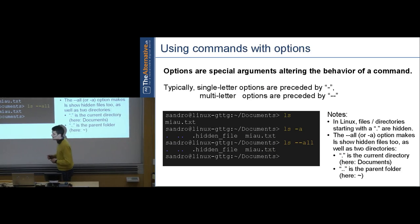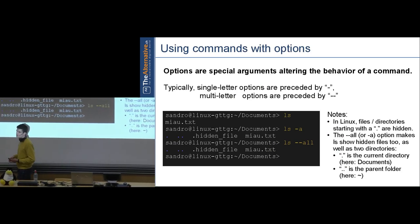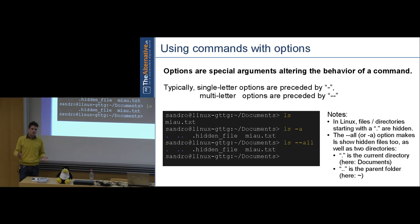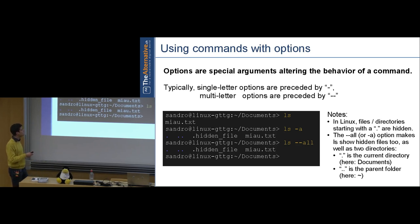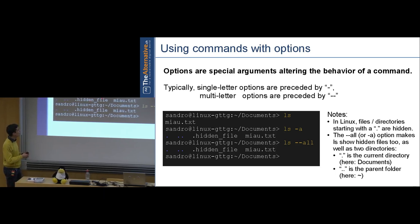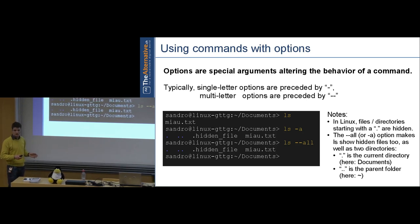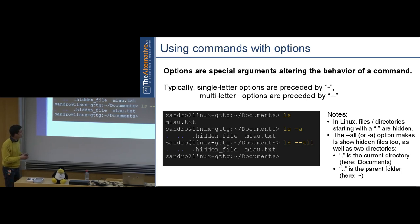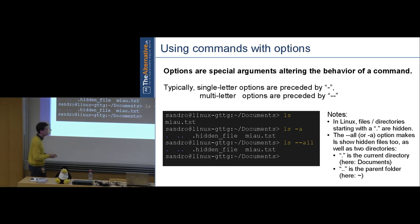Options specify how to do something, as opposed to arguments which specify what to act on. Options are also technically arguments but special ones. For example, 'ls -a' (a for all) shows hidden files. Under Linux, files starting with a dot are hidden. Without '-a' they are invisible; with '-a' you also see '.' (current directory) and '..' (parent directory).